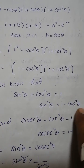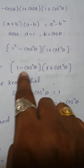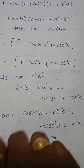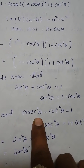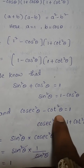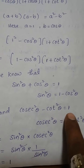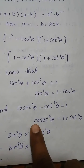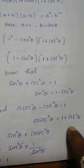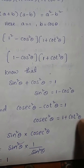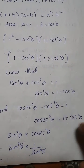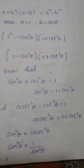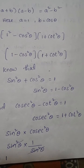In place of (1 minus cos square theta), substitute sin square theta. Again, we know one more identity: cosec square theta is equal to 1 plus cot square theta. So in place of (1 plus cot square theta), substitute cosec square theta.